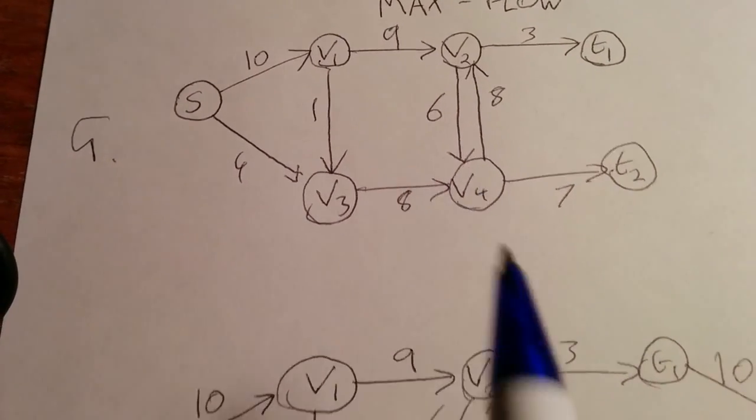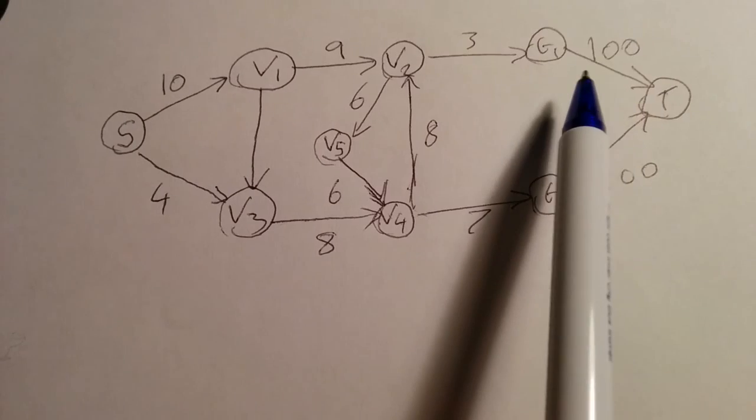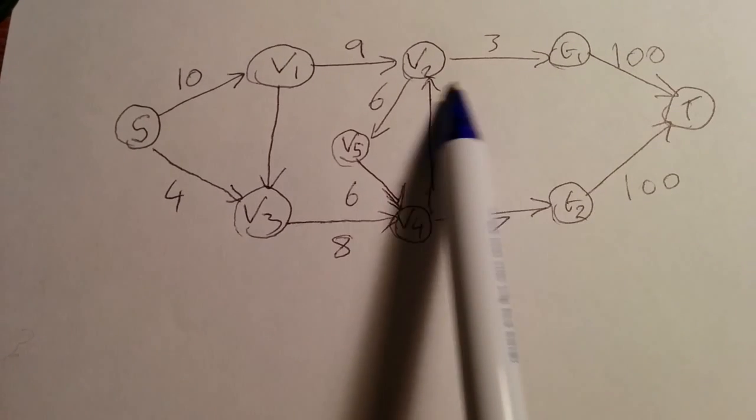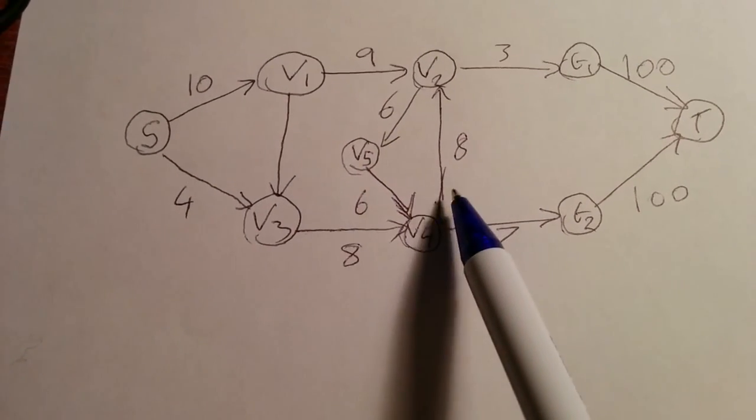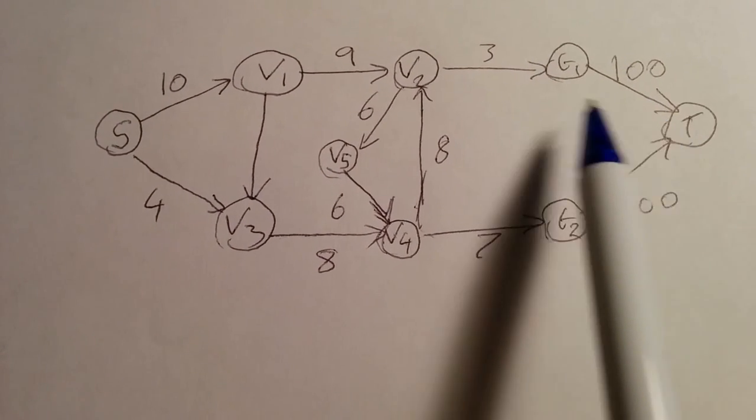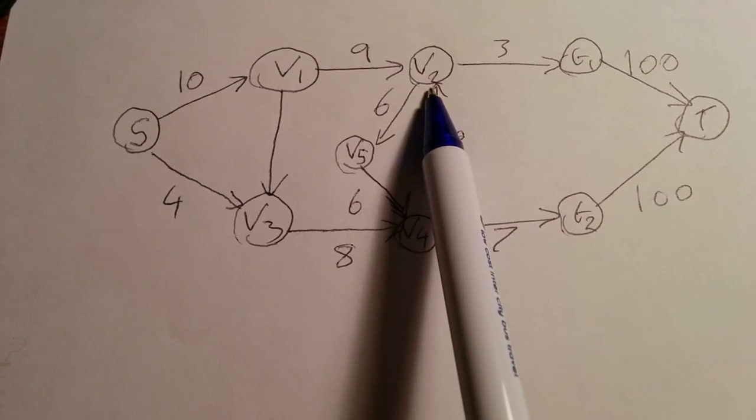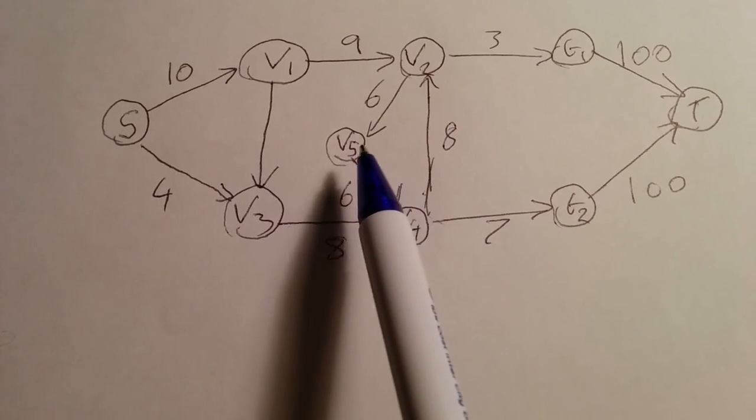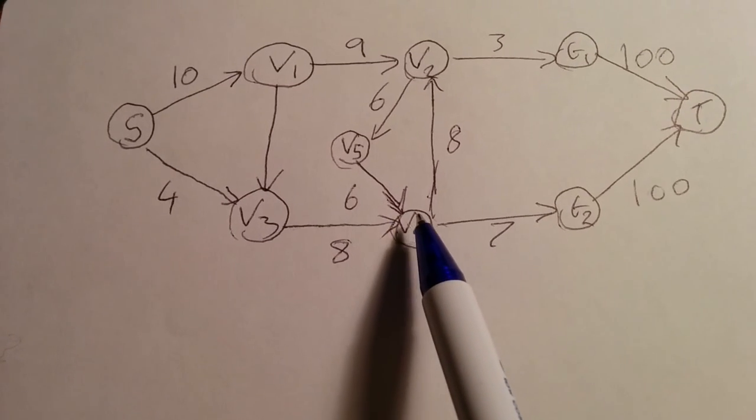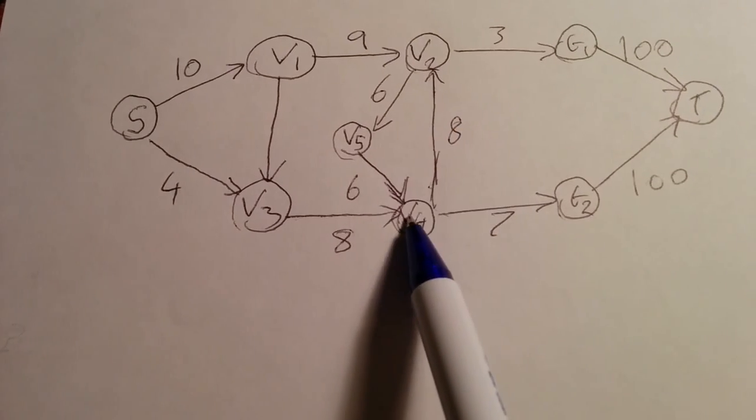So let's move on to the fixed version of G. As you can see, I've added the super sink that I was talking about, T. And the values between T1 and T and T2 and T is 100. This is because these new values need to be greater than the rest of the flows in the network, so that they do not negatively affect the Ford-Fulkerson algorithm later. I've also fixed this issue between V2 and V4 by adding a new vertex V5, and then I've just updated the flow, so it goes from V2 to V5 with flow 6, and then from V5 to V4 with flow 6. And I've left the edge from V4 to V2 with flow 8, because now there's only one edge connecting.